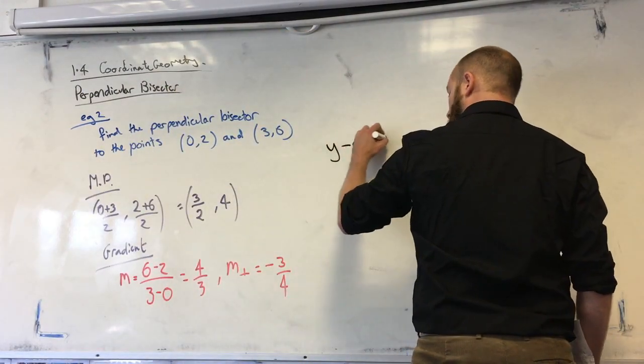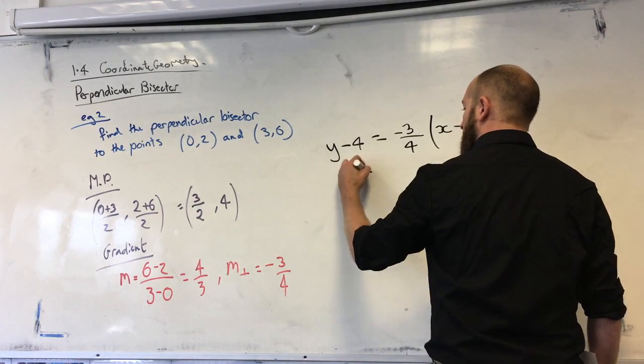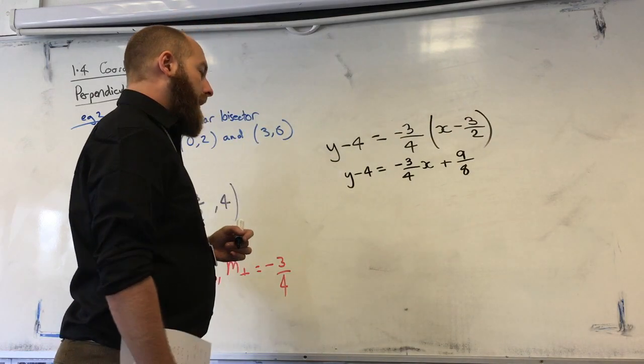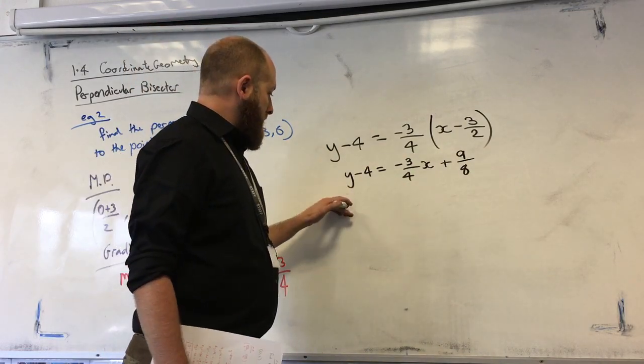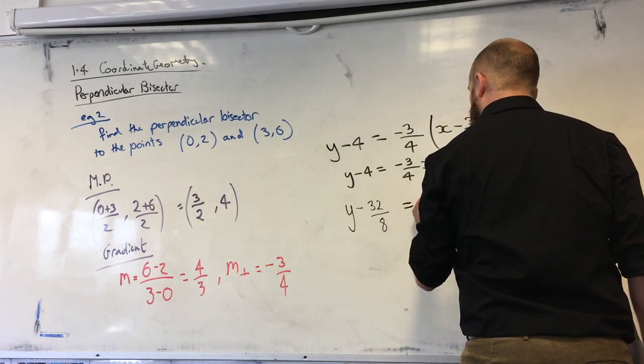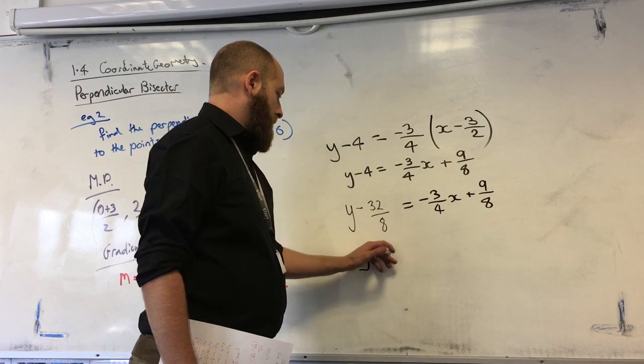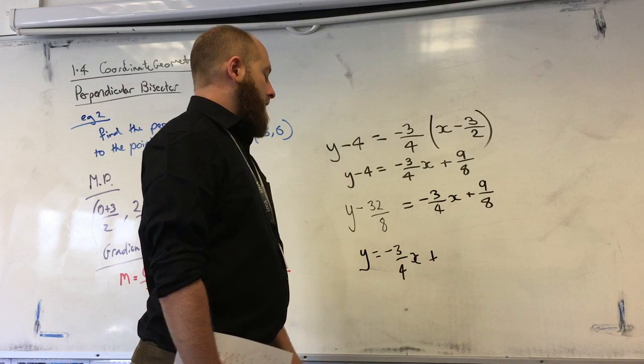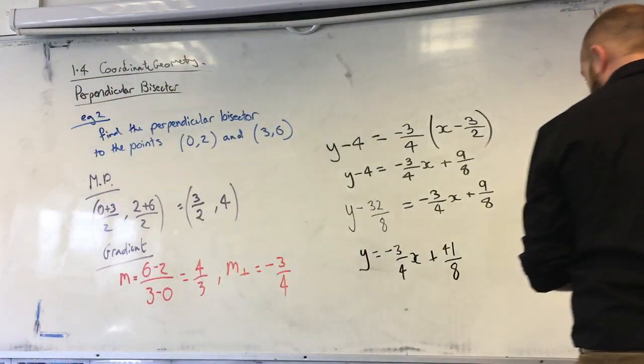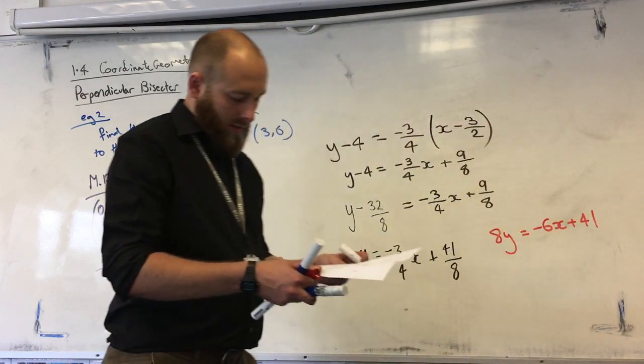So y minus 4 equals minus 3 over 4, x minus 3 over 2. Expand the brackets. And now we need 4 in terms of 8. So that's going to be 32 over 8. Add that over. So that gives us 41 over 8. If you want to be good, times through everything by 8, and get 8y equals minus 6x plus 41.